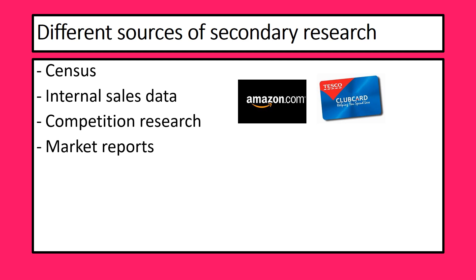Market reports are things written by businesses to analyse whether a particular market — say the clothes market in the UK — is growing or shrinking, or what the particular trends are, like in the chewing gum market. You can buy these reports; they usually cost about a couple of thousand pounds each. But for a big business — if I was Wrigley's, I would definitely be buying the chewing gum report for the UK. So market reports cost a couple of thousand but are well worth spending if you're a big business.